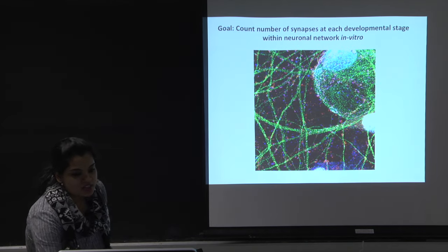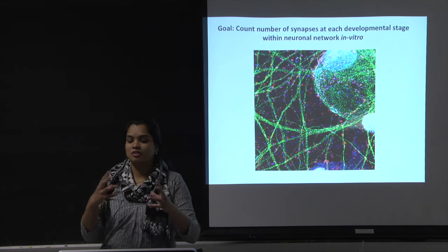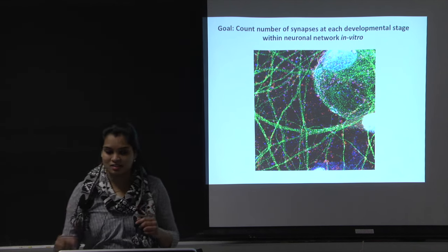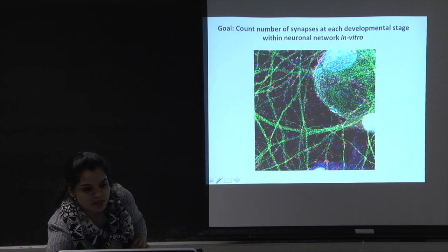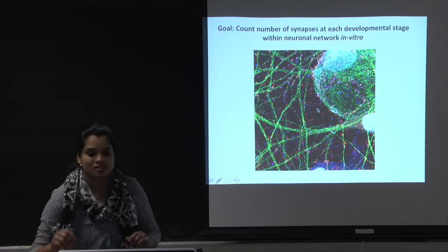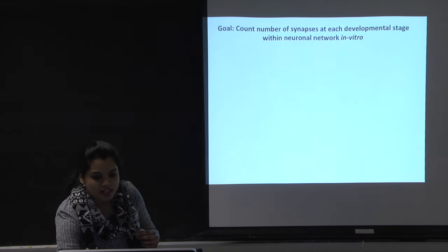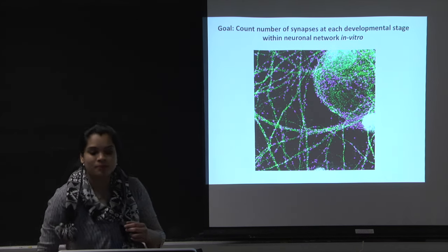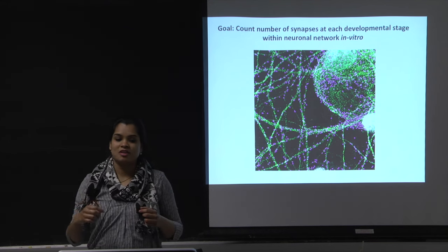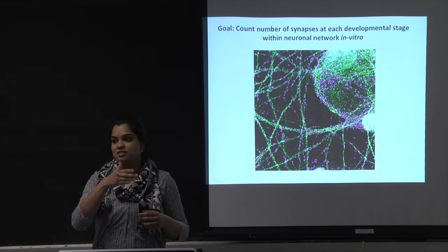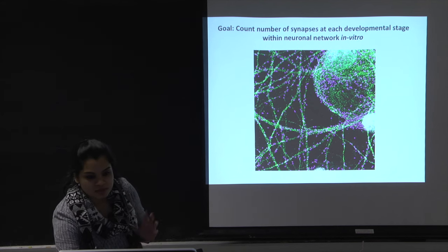Here I'm showing a closeup of one of those images with all four signals. You can see there are pre- and post-synaptic terminals — the red and blue signals — all over the place. I wanted to end up with an image showing how many synapses lie just on the dendrites, meaning the green signal. That was my goal.